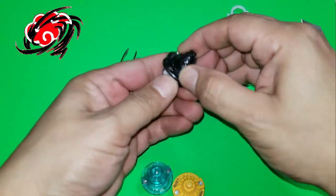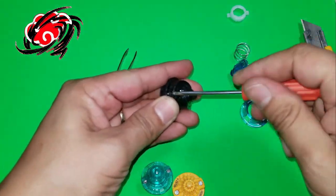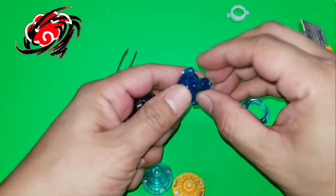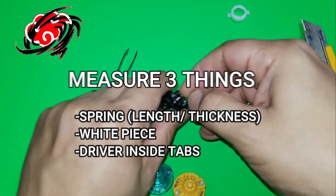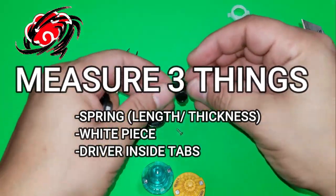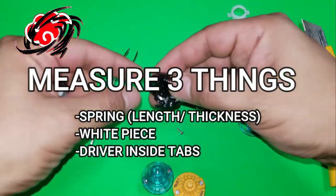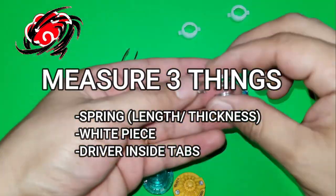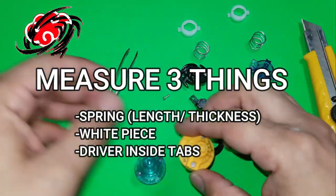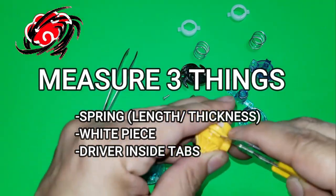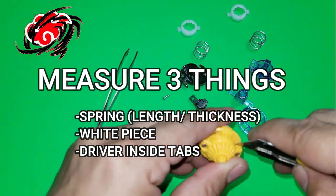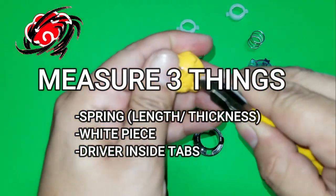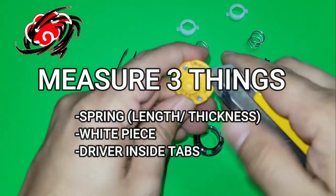So I'm gonna put all the parts here so that we can clearly see them separated out, and of course I'm gonna measure the spring, the actual part that catches onto the layer of the Beyblade, and I'm gonna measure the little white part that has the clickers, the things that go into the teeth of the layers.